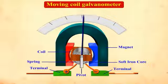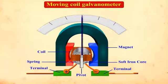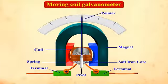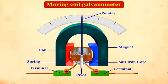A moving coil galvanometer works on the principle that a current-carrying coil placed in a magnetic field experiences a torque. On your screen, can you see the basic construction of a moving coil galvanometer?